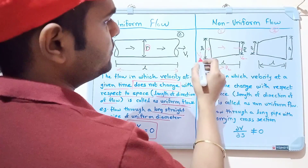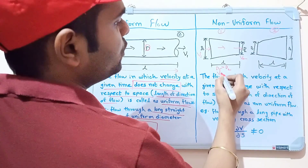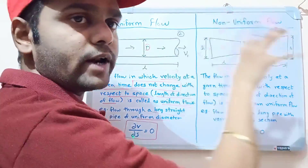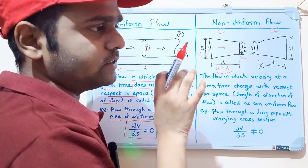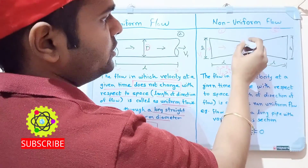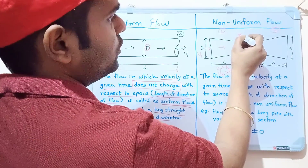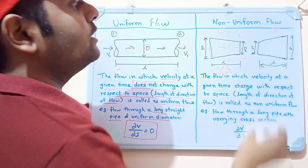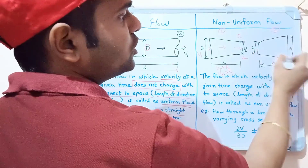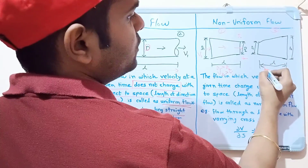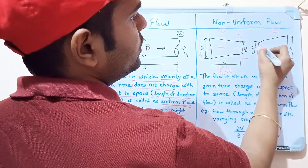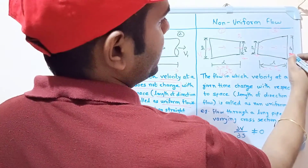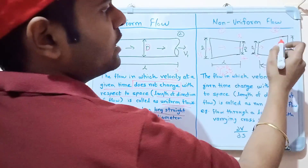Since d1 is greater than d2, the pipe is contracting, and velocity increases in the contracted direction. So v2 is greater than v1. In the second case, this is a divergent portion where d1 is less than d2, and fluid flows in this direction. Here the first velocity is v1 and the second is v2.